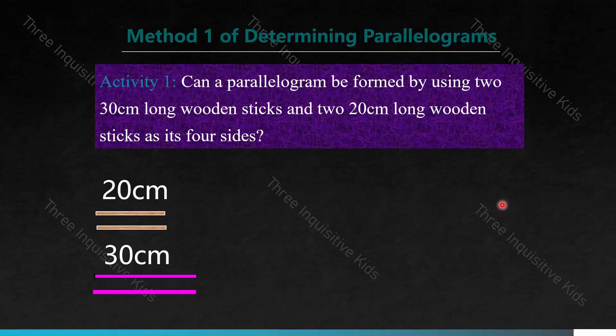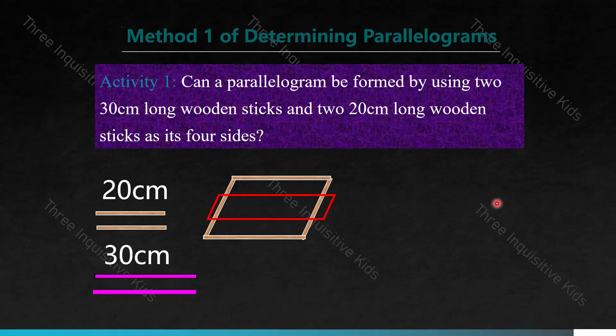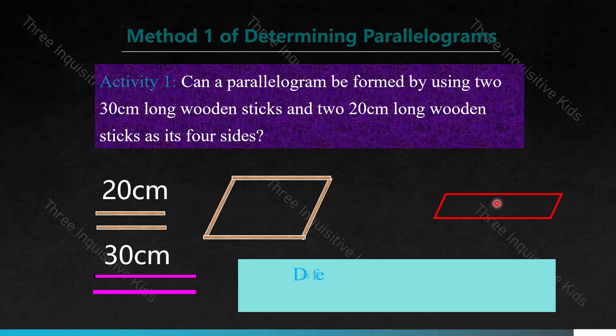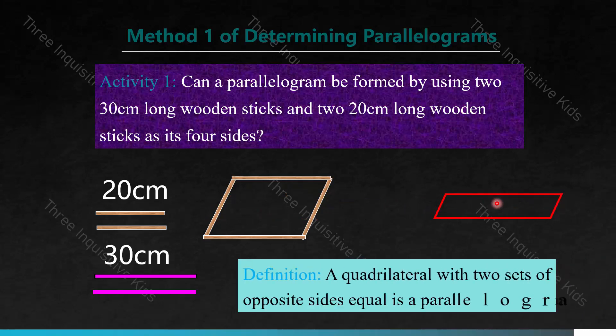In this lesson we will be looking at the different methods of determining parallelograms. Here's our first method. Can a parallelogram be formed by using two 30cm long wooden sticks and two 20cm long wooden sticks as its four sides? Well, let's test it out. Its definition is that a quadrilateral with two sets of opposite sides that are equal is a parallelogram.